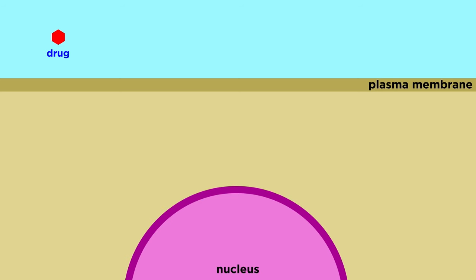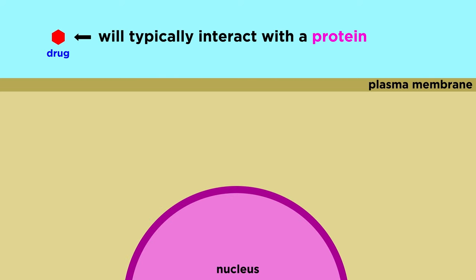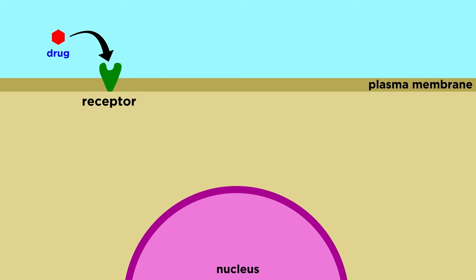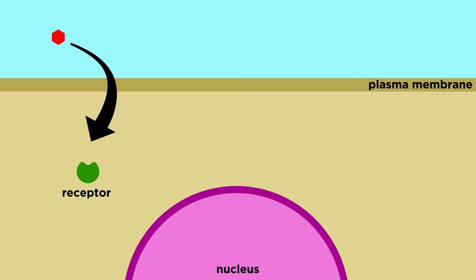Far and away, the vast majority of drugs elicit a physiological response because of the way that they interact with a particular protein. Most often this will be a receptor protein, which may be embedded in the cell membrane, or it may be found inside the cell, whether in the cytoplasm or the nucleus.